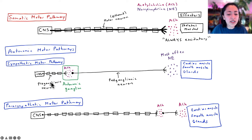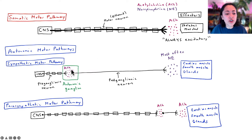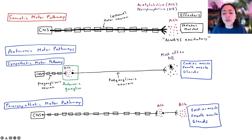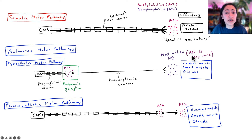The pre-ganglionic neuron communicates with the post-ganglionic neuron using acetylcholine, and that's always going to be true. When acetylcholine is released from the pre-ganglionic neuron, it activates the post-ganglionic neuron, causing a nerve signal to be sent along it. The post-ganglionic neuron in the sympathetic motor pathway will most often release norepinephrine onto the target. The only exception is sweat glands, where acetylcholine is secreted instead.